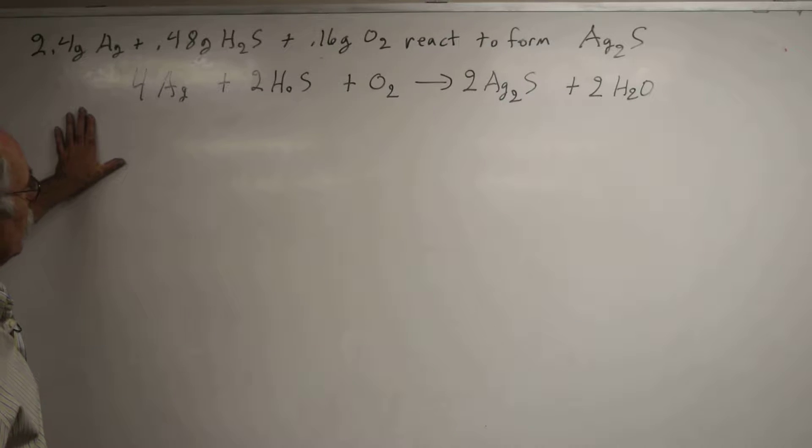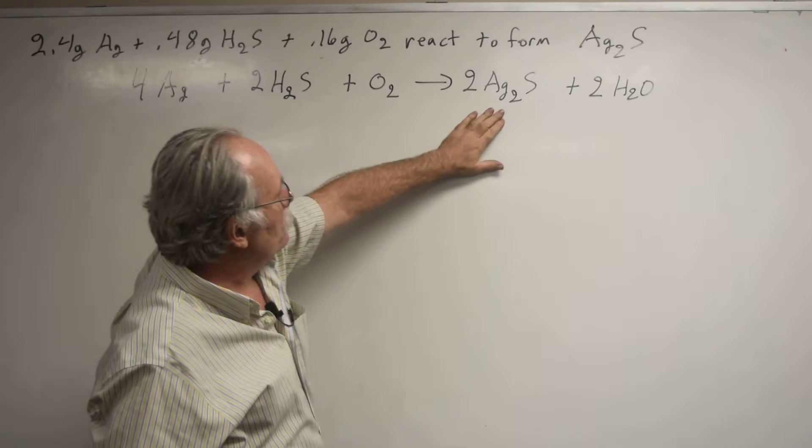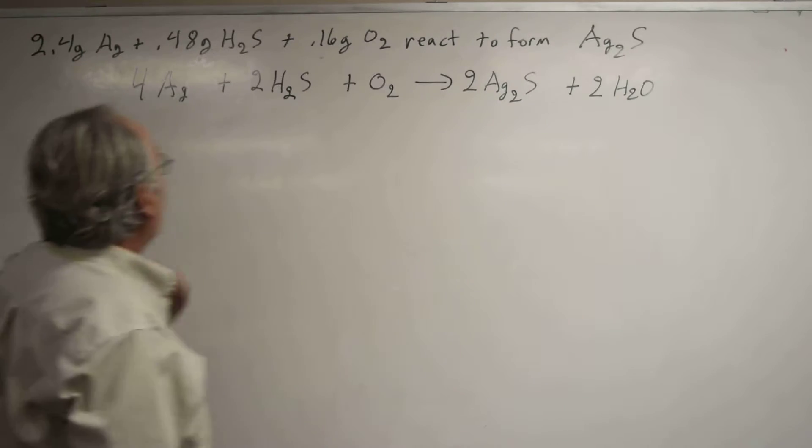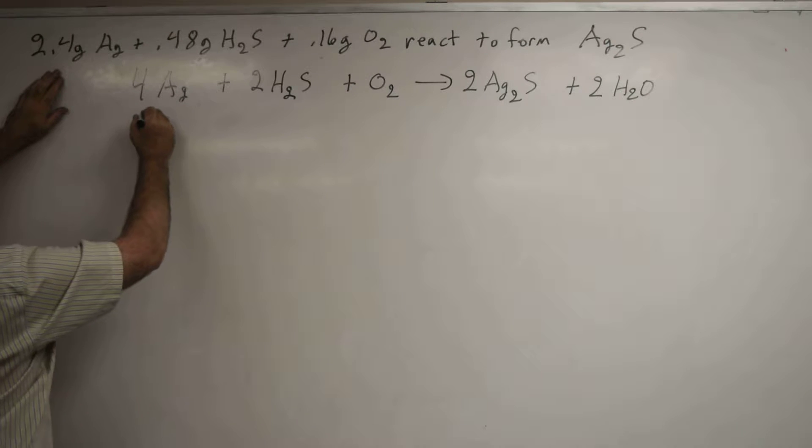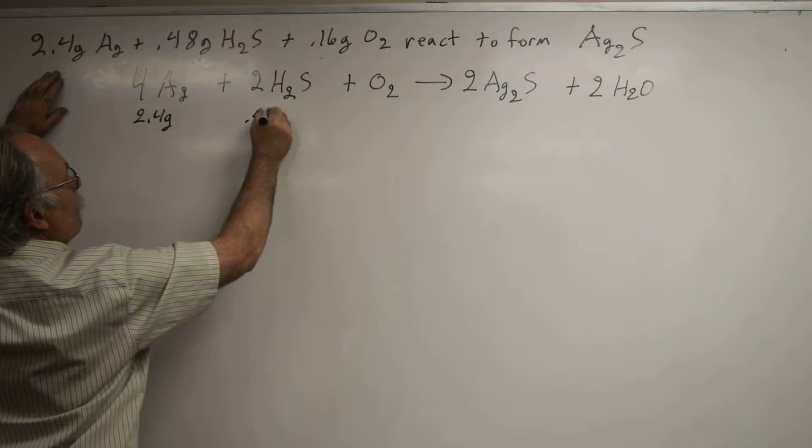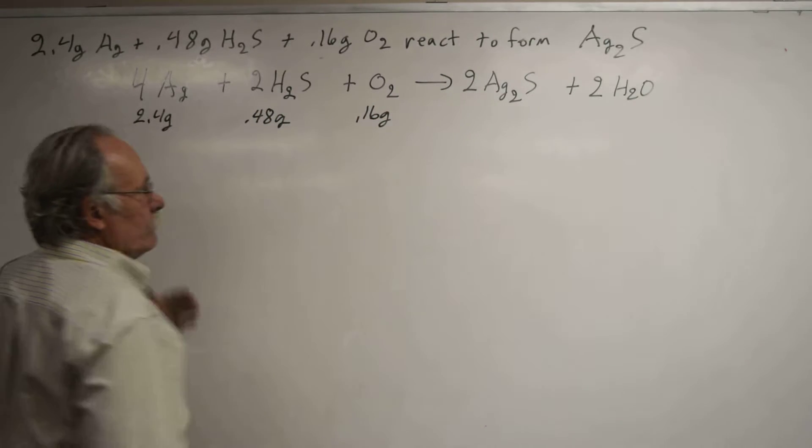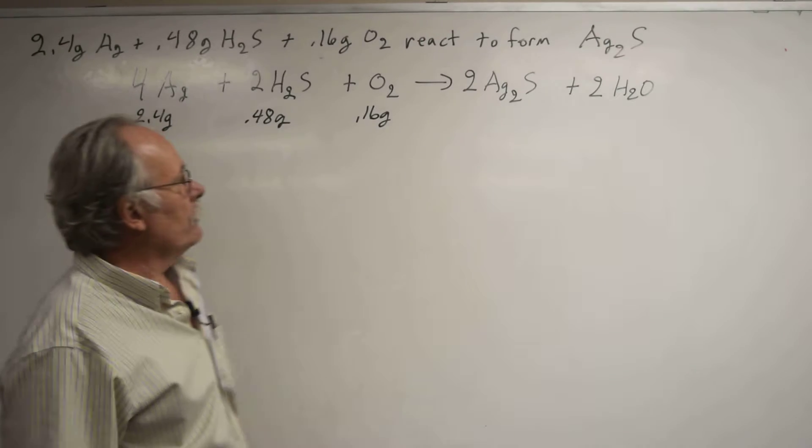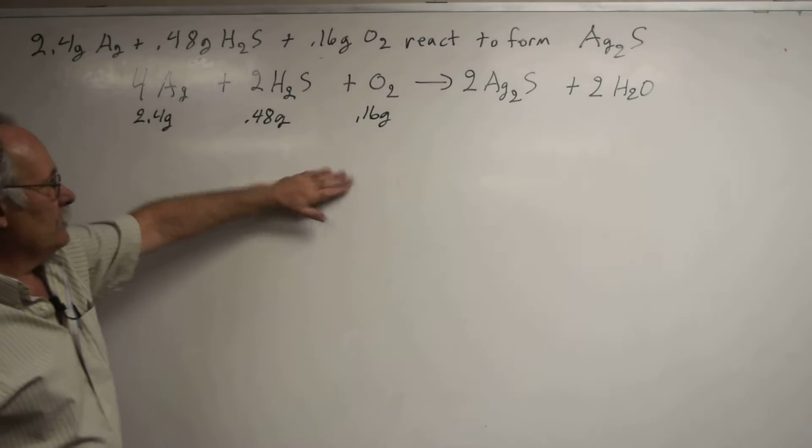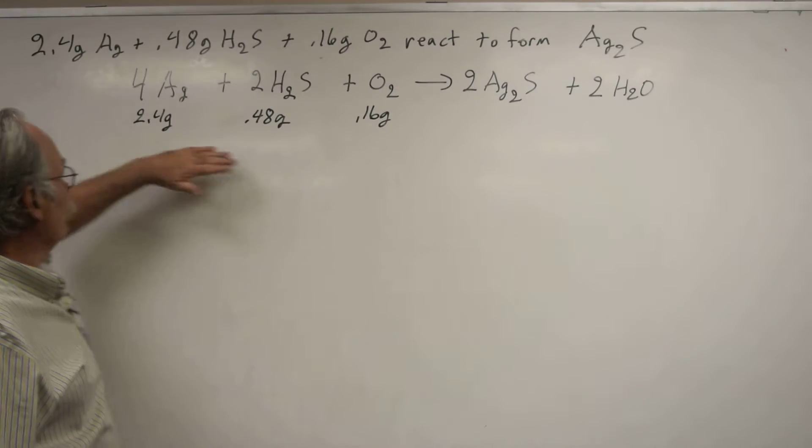Here we have a limiting reagent problem, looking at the oxidation of silver with H2S and O2 to form silver sulfide in water. We're given 2.4 grams of silver, 0.48 grams of H2S, and 0.16 grams of oxygen. We want to know how much silver sulfide would be formed, so we need to identify the limiting reagent—which of the reactants is used up first.